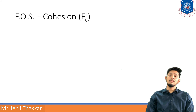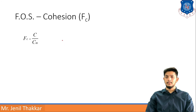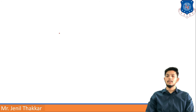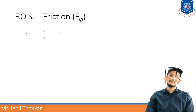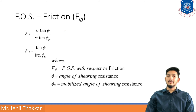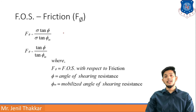Factor of safety with respect to cohesion is denoted Fc = C / Cm, where C is the available cohesion and Cm is the mobilized cohesion. Factor of safety with respect to friction, F_φ, is written as σ tan φ / σ tan φ_M; since σ cancels, F_φ = tan φ / tan φ_M, where φ is the angle of shearing resistance and φ_M is the mobilized angle of shearing resistance.